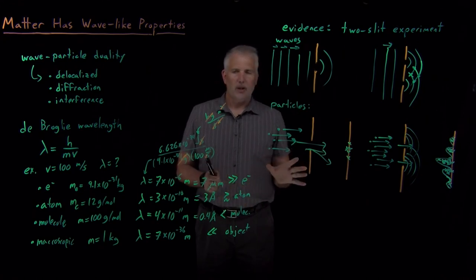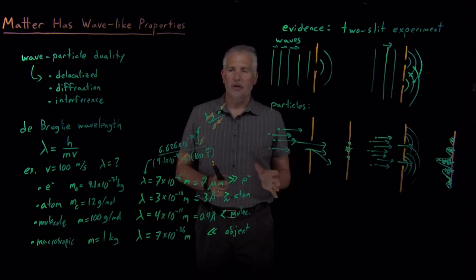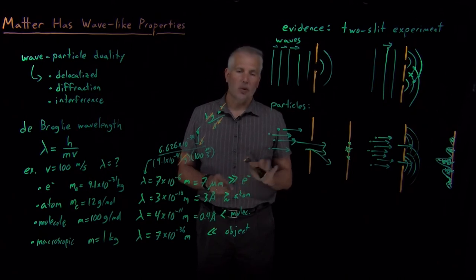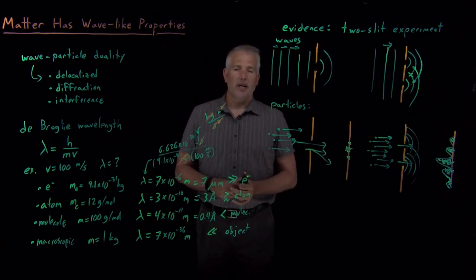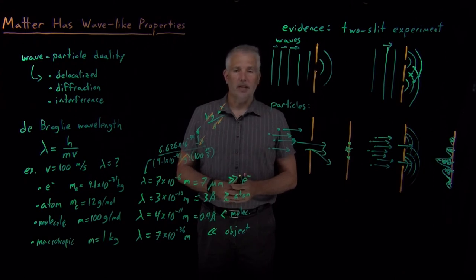That was one of the first experiments that confirmed small objects do in fact behave like waves. That completes our qualitative tour of quantum mechanical properties. Our next step will be to get more quantitative — to understand quantum mechanics at the level of equations and numbers so we can begin to make concrete predictions.